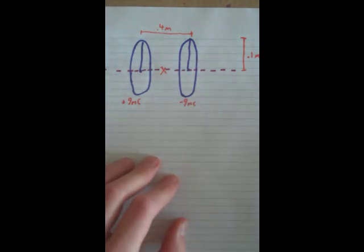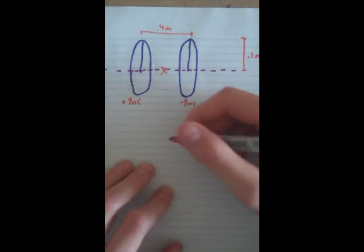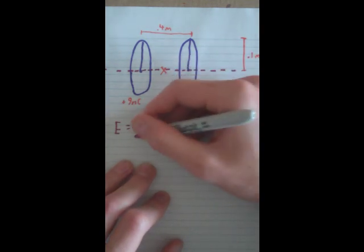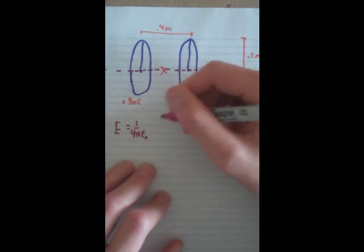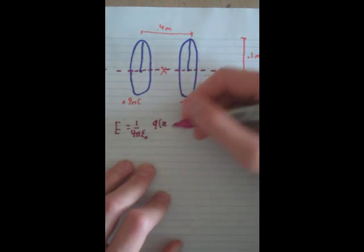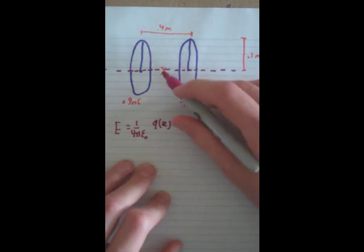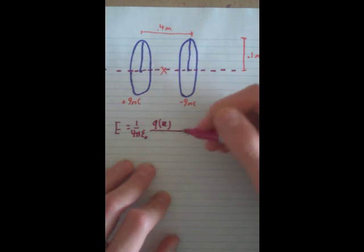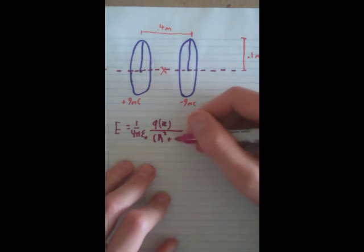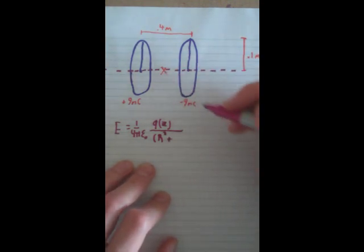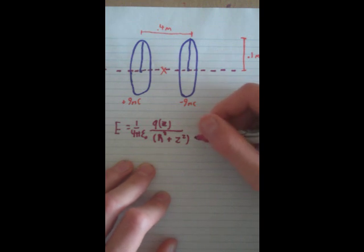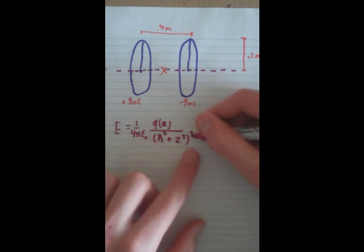Let's look at the negative one first. The formula for a loop is: electric field equals 1 over 4π epsilon-naught, times Q (the charge), times Z — which is the distance from the center of the loop to the point where we're measuring the electric field — over (R² + Z²) to the power of 3/2, where R is the radius.